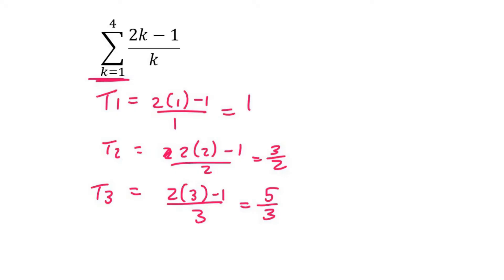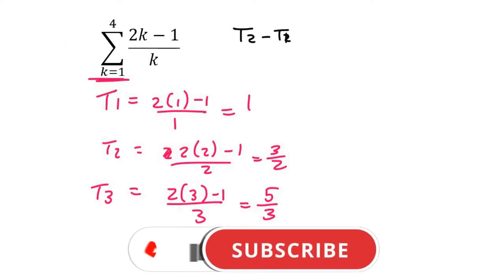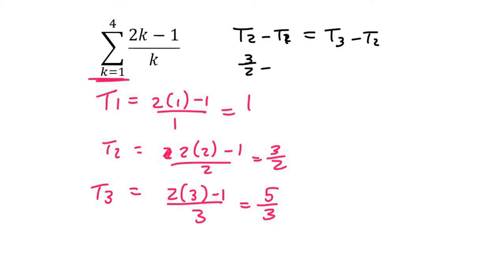To test if it's arithmetic, I would test to see if t2 minus t1 is the same as t3 minus t2. Let's see if it is the same. So if I say 3 over 2 minus 1, that gives us 1 and a half minus 1, which is a half. Is that the same as t3 minus t2, which is 5 thirds minus 3 over 2? It gives us 1 over 6. So these two are not the same, so it's not arithmetic.